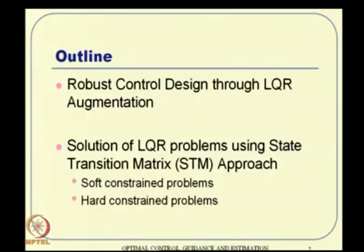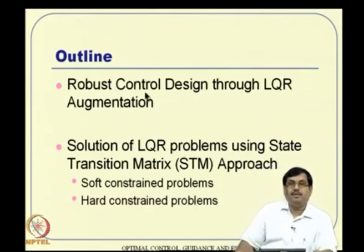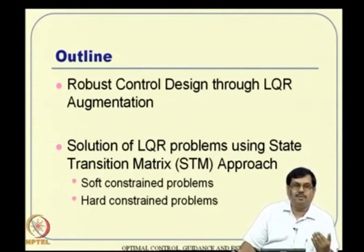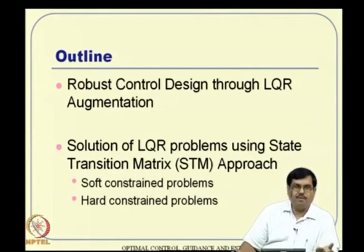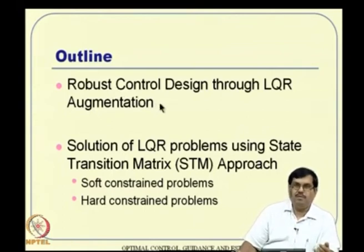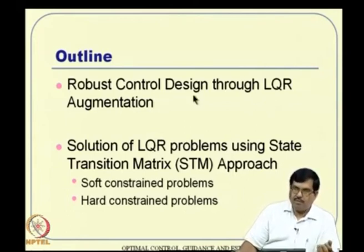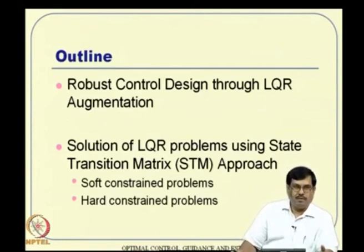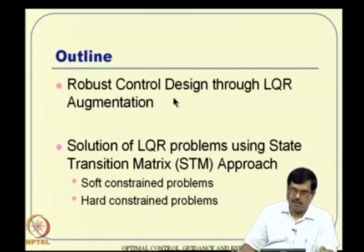Primarily two things I want to discuss in this lecture. One is robust control design through LQR augmentation. It is possible to have some sort of robust control design. When we talk about robust control, it can arise from several factors: robustness with respect to external noise, modeling uncertainty, and parameter variation. No matter how much modeling we do, there will be some unmodeled dynamics, including parameter uncertainty. That kind of thing can be handled through LQR. When external noise is present, it is still possible to use LQR under augmentation with Kalman filtering, leading to LQG design - linear quadratic Gaussian - but we are not talking about that here yet. We will talk about robustness with respect to parameter variation or some forcing function.